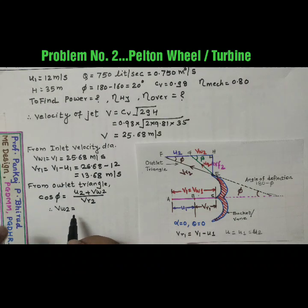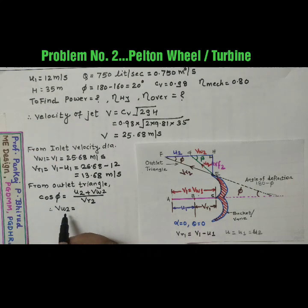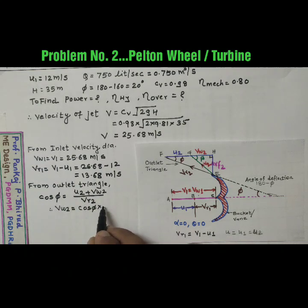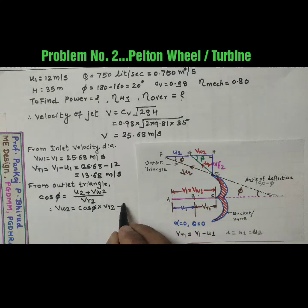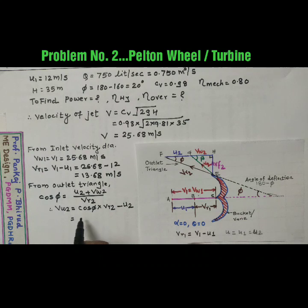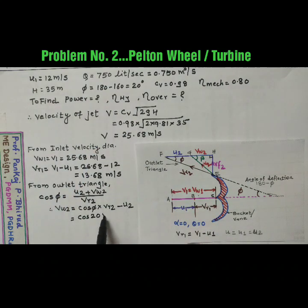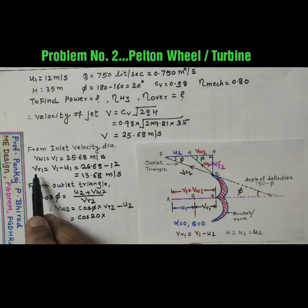Because for calculating power we require Vw1. So Vw2 is cos phi into Vr2 minus U2. So it is cos phi is 20 into Vr2. Now here Vr1 equal to Vr2.